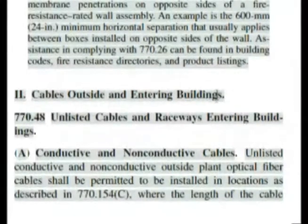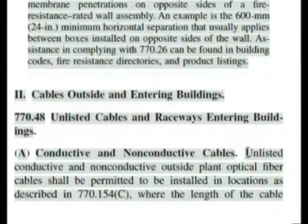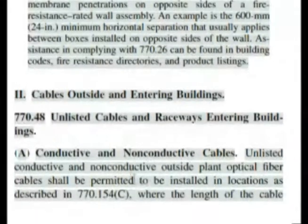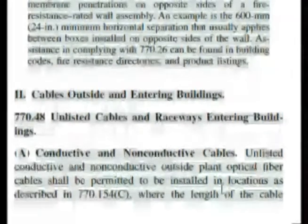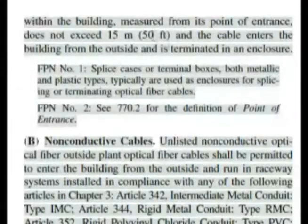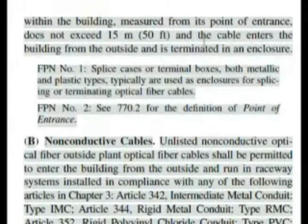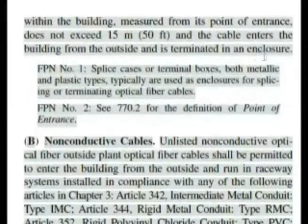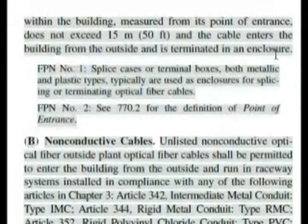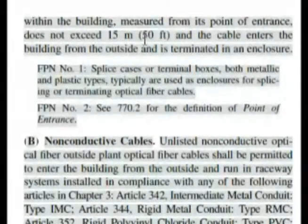Here we are at Roman numeral II of Article 770, cables outside and entering the buildings. It's talking about unlisted cables, and that was part of our question — the first word here is 'unlisted.' As you start reading down, it's asking where the length of the cable — we go to the next page at the top to get the rest of the answer. And here it is, almost word for word: measured from the point of entrance does not exceed 15 meters or 50 feet, and the cable enters the building from the outside and is terminated in an enclosure. So our distance is 50 feet for our answer.